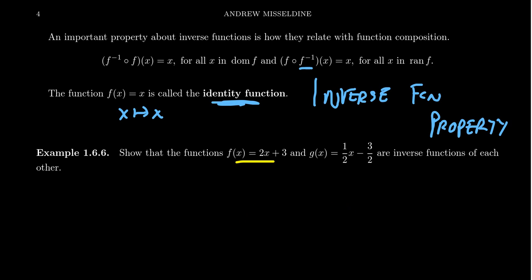Let's take the function F of X equals 2X plus 3. And here's another function, G of X equals 1 half X minus 3 halves. I claim that these two functions are inverse functions of each other. In order to show that two functions are inverses, what you're going to do is you're going to compose them together. So compute F composed with G of X here. So this means you put G of X inside of F of X.